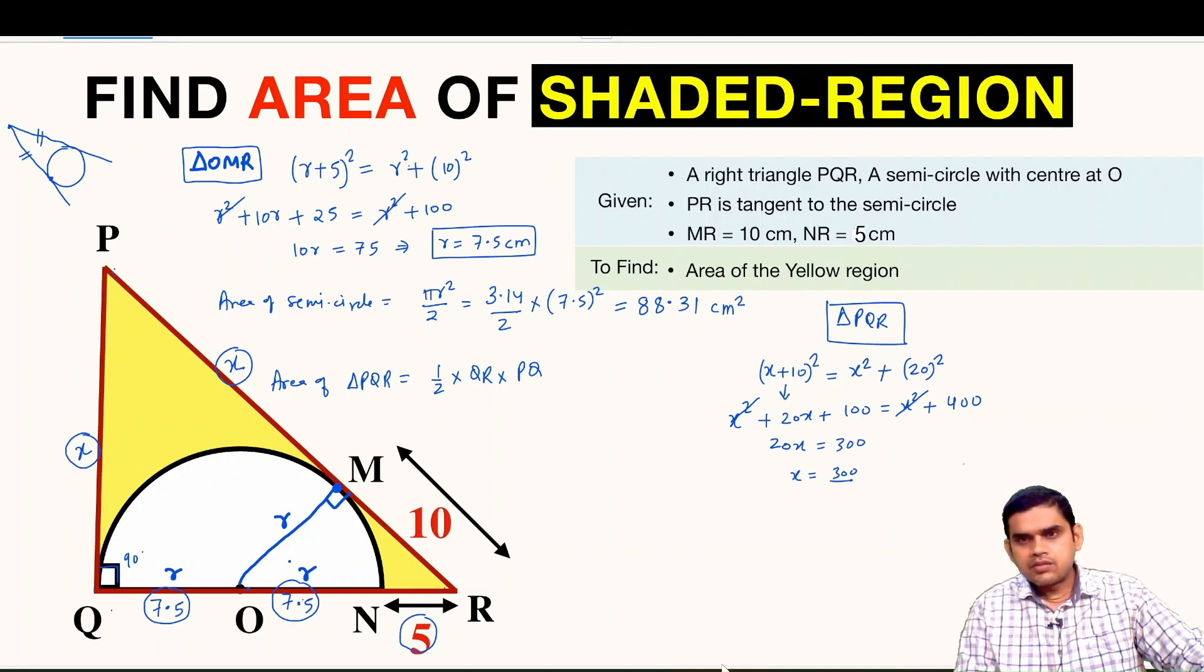So x is equal to 15. So x is equal to 15 units. So we can find the area of triangle PQR now. So this is half times QR we just found as 20 times PQ is 15. So this is 2 times 10 is 20, and this is 150 centimeter square.